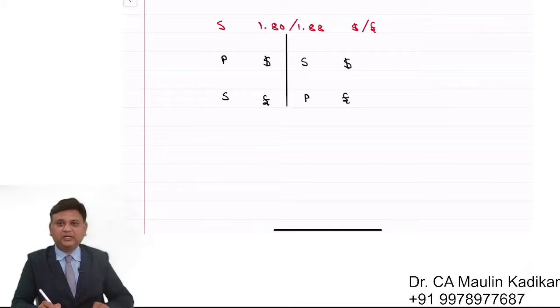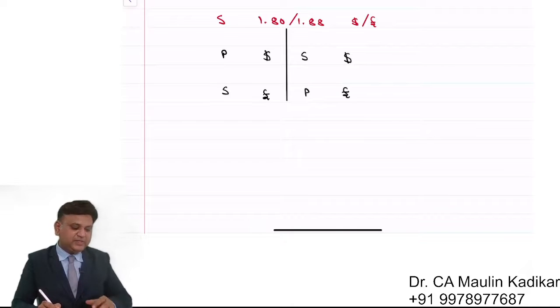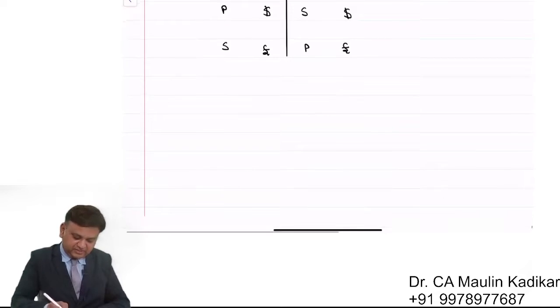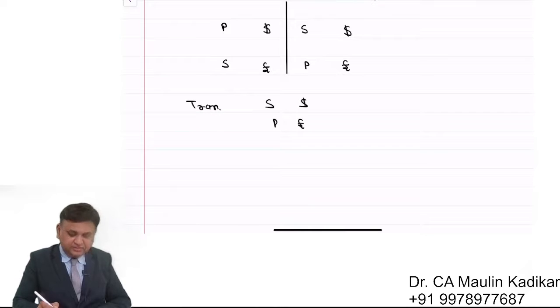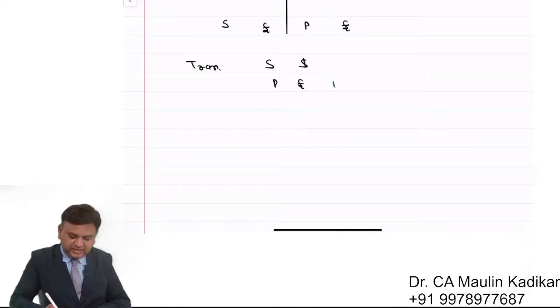In the question, what is given? Question says Mrs. X wants to go to UK for shopping. She expects that the bill of shopping will be pound one lakh. How much dollar should she sell? Here we have to understand that the transaction is sell of dollar and purchase of pound. How much pound to buy? One lakh.